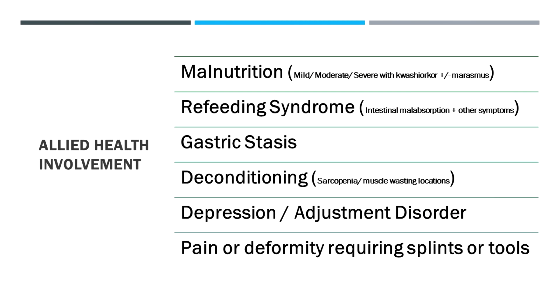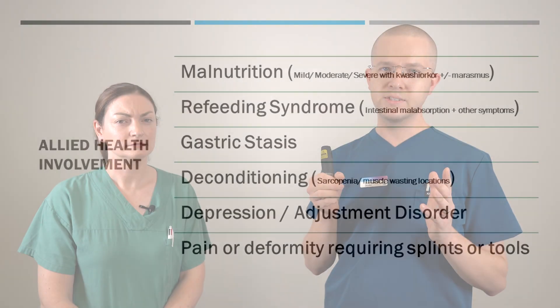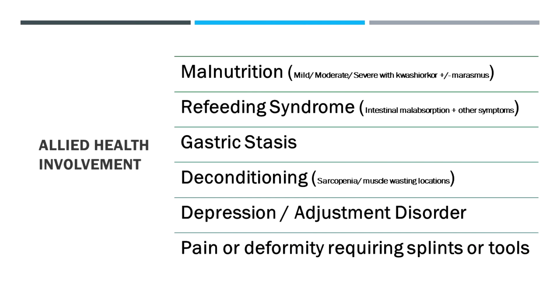Allied health are key members of the multidisciplinary treatment team. Dietitians document malnutrition — whether marasmus or kwashiorkor — and documenting severity is really important. Refeeding syndrome doesn't code well, so writing intestinal malabsorption or related symptoms is how to get it recognized. Gastric stasis is also common. Physiotherapists document deconditioning, sarcopenia, or specific muscle wasting — often proximal. Occupational therapists document mental health impacts and pain or deformity requiring orthotics, splints, or other tools. Allied health teams get their funding because conditions are written in the correct way.